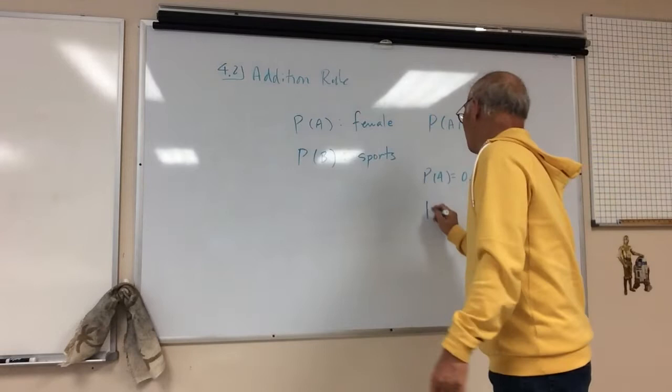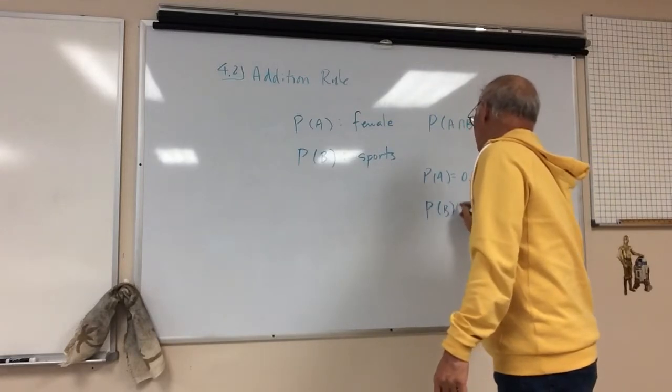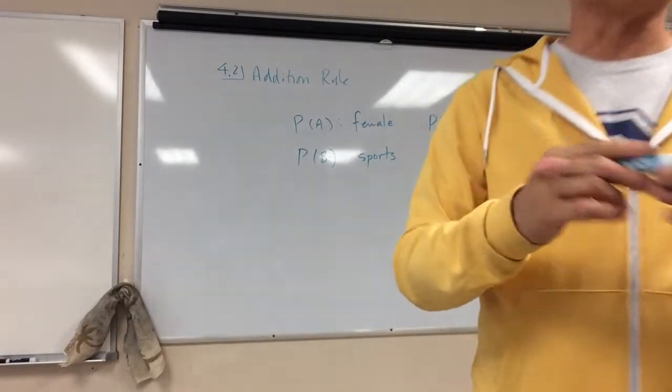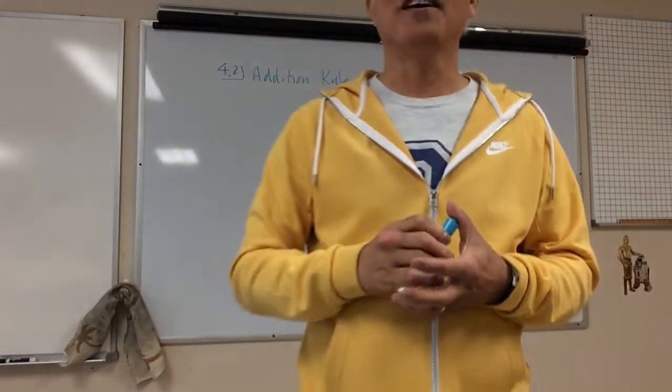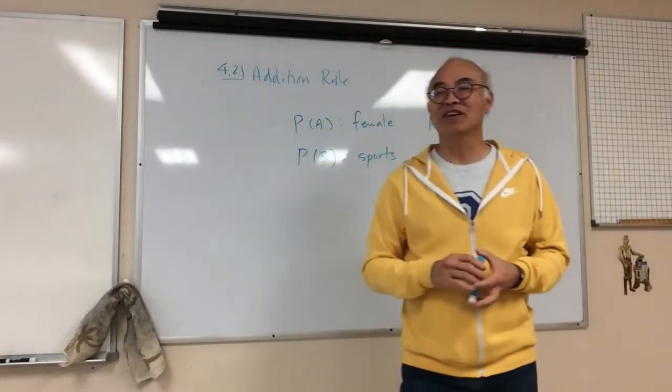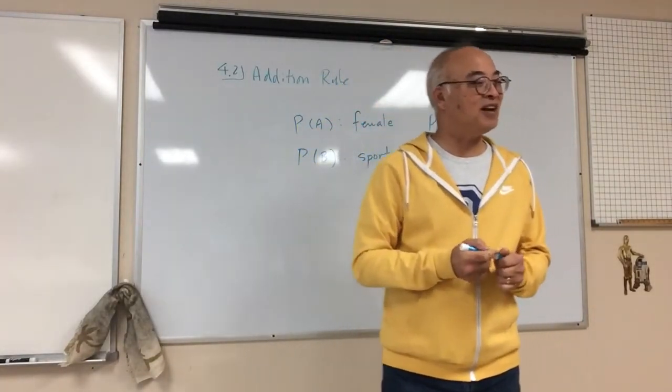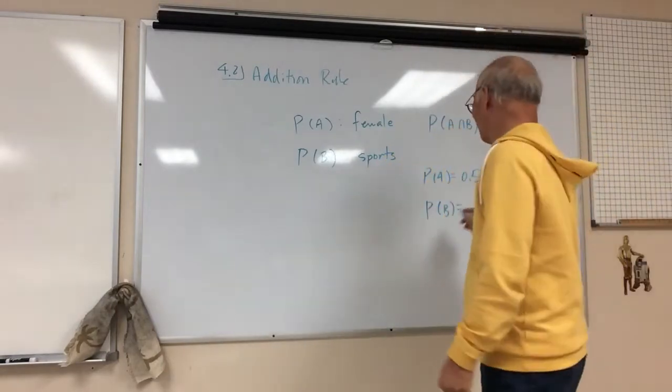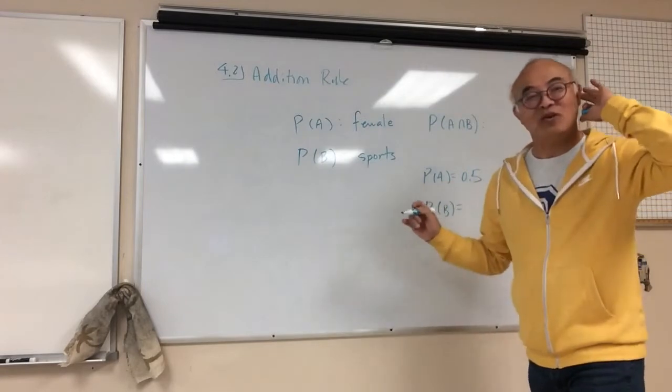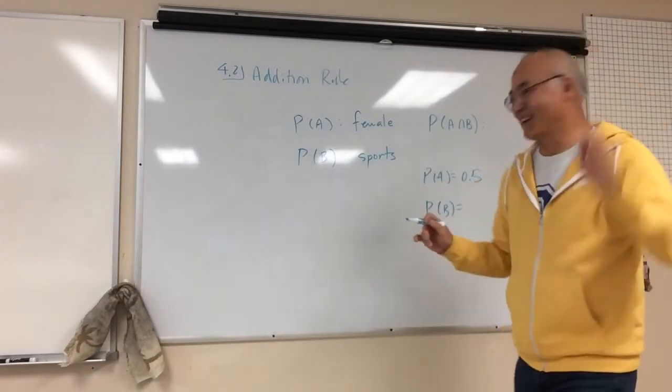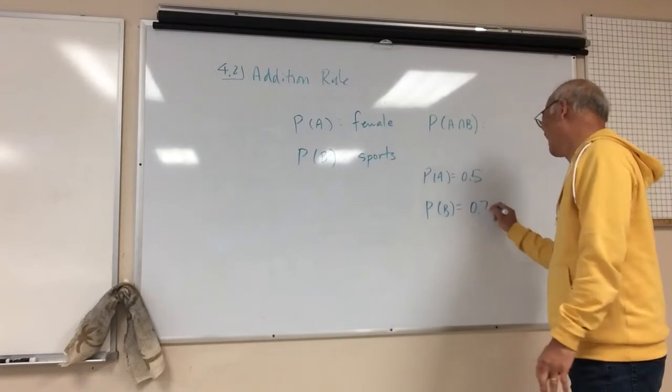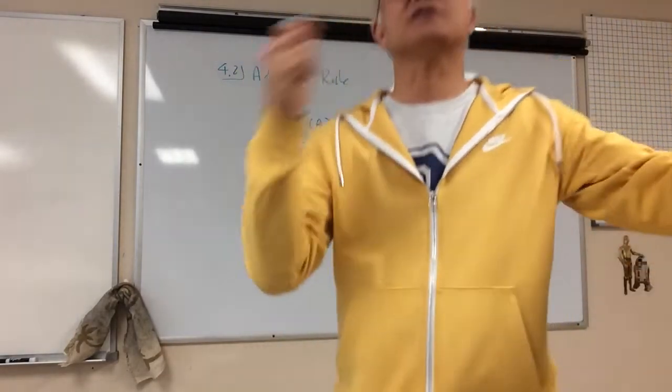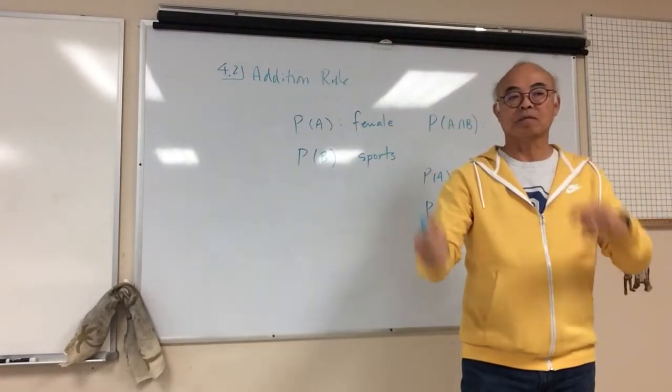P of B, which is the probability of you playing sports, was - yesterday we did this. What was the probability of playing sports? Like 85% or something? That's a lot. 70? Do I hear 75? 75 percent, okay? So let's say 75% of Blanchett people play sports.